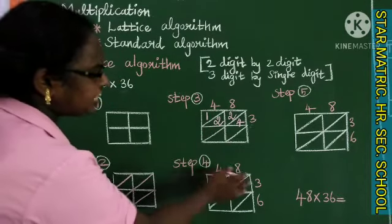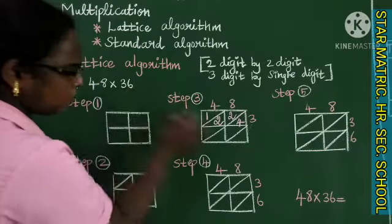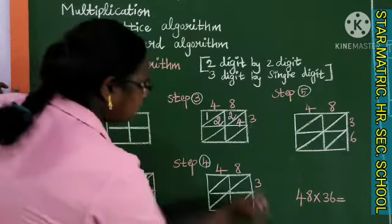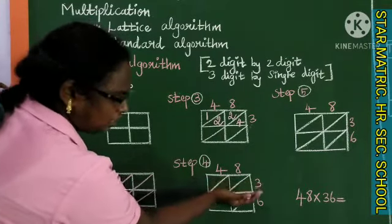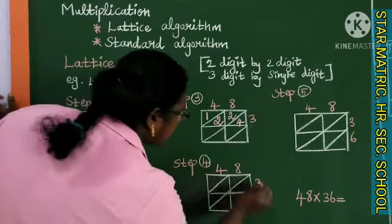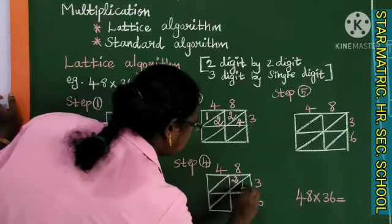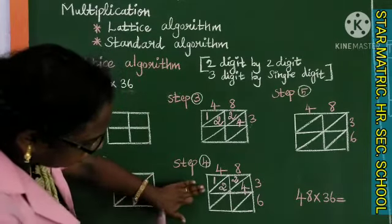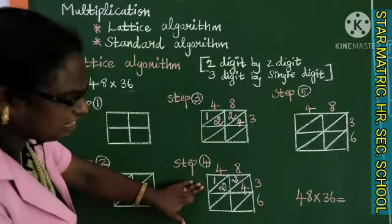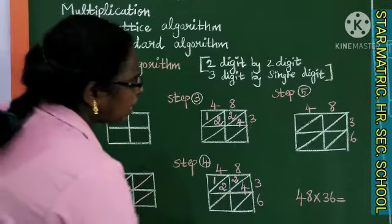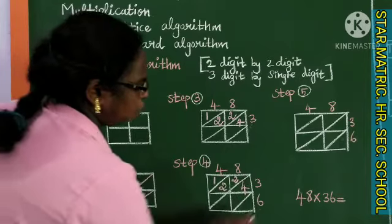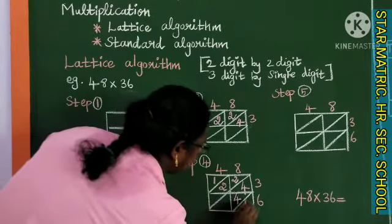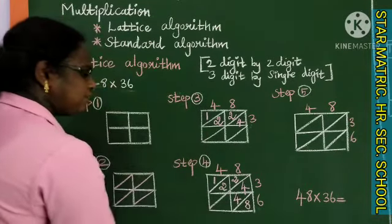Next, we multiply by 6. 6 into 8 is 48, and 6 into 4 is 24. You fill in the top line with the answers from multiplying by 3, and the bottom line with the answers from multiplying by 6. So 3 eights are 24 and 4 threes are 12.